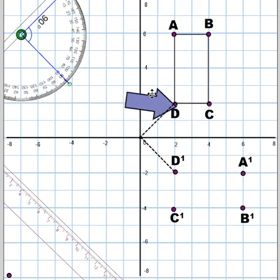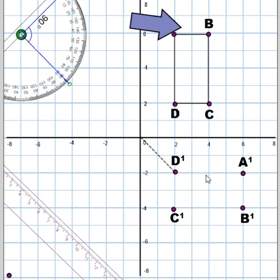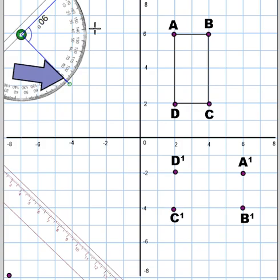Now the test will be when I connect my dots. So as I see in my original shape, A connects to B, B to C, C to D, and D to A. Let's get rid of these lines so we don't get confused about them. Okay, so let's look and see as I connect my dots. A to B, D to C, C to D, D to A.